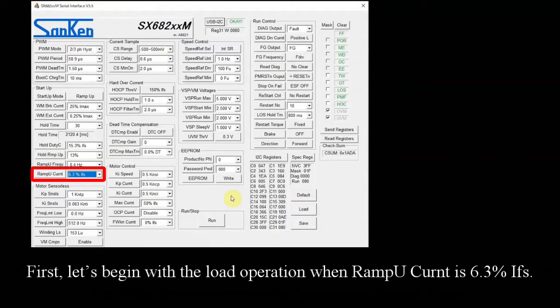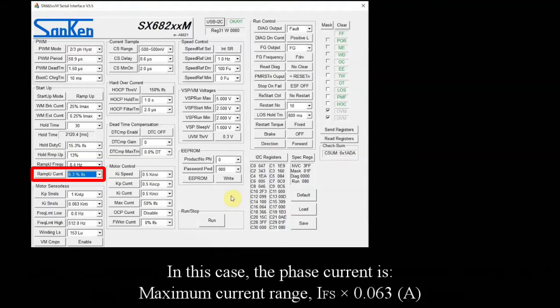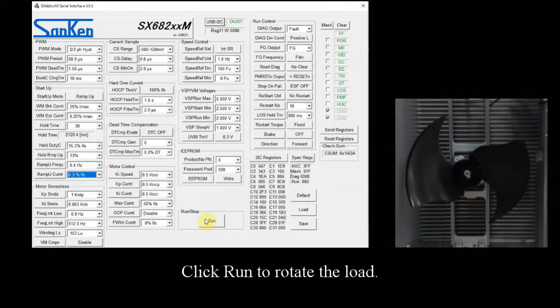First, let's begin with the load operation when ramp up current is 6.3% IFS. In this case, the phase current is maximum current range IFS times 0.063. Click run to rotate the load.